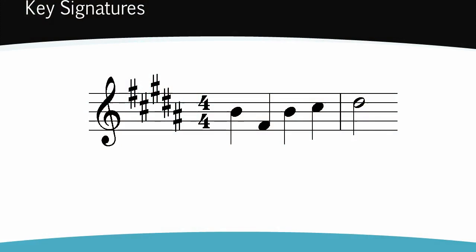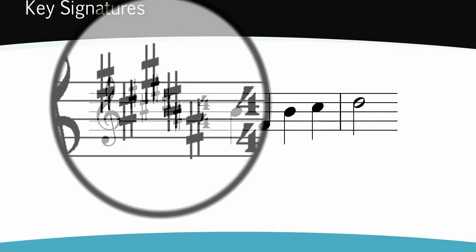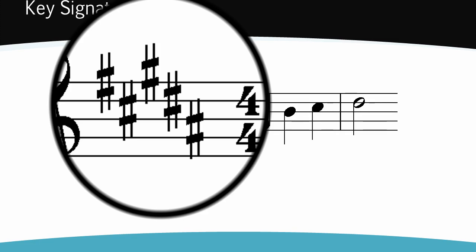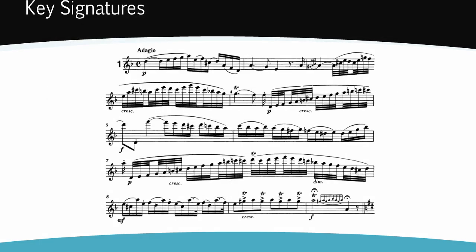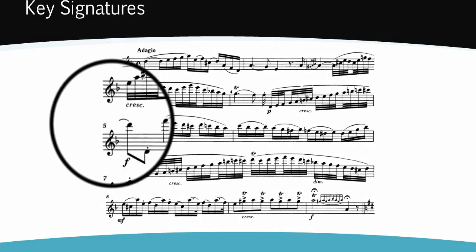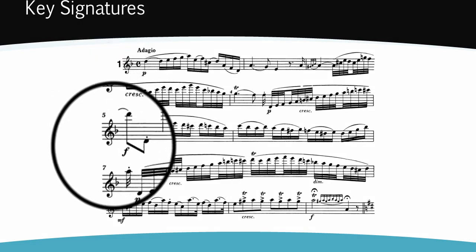Key signatures are special groups of sharps or flats which are written at the beginning of the stave, immediately after the clef. The clef and key signature need to be written on every stave in a piece of music, not just at the beginning of the music.